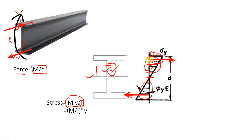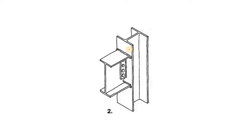To transfer the moment in your beam, you have to connect the flange of the beam with the flange of your column. As you can see in this picture, the flange of the beam is connected to the flange of the column through welding. Similarly, the bottom flange is also connected with the column flange by welding. In this connection, both shear through the web and moment through the flange are transferred from the beam to the column. That's why this connection is known as a moment connection.